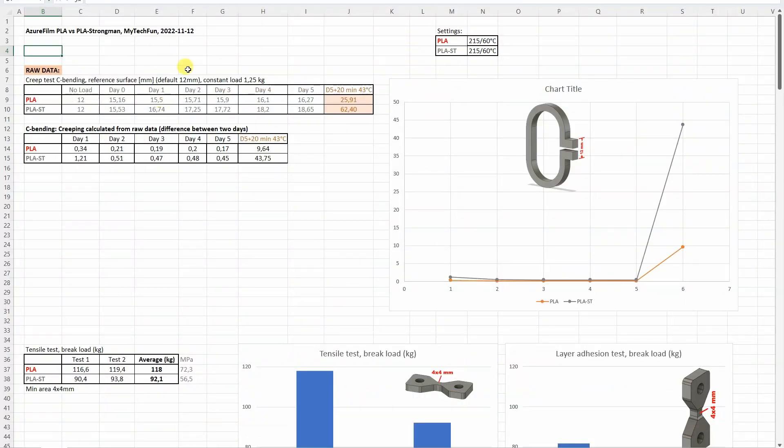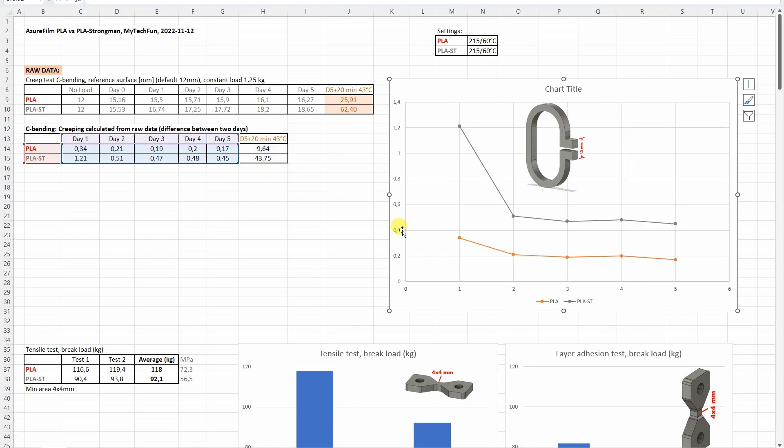This is how they look after only 20 minutes at approximately 45 degrees Celsius. Let's analyze the results in this Excel table which is downloadable from mytechfun.com website. Let's start with the creep test. These numbers are raw data distance between the two reference surfaces. But what we need is actually the difference between two days. That's why I prepared this table and it's visible on this graph.